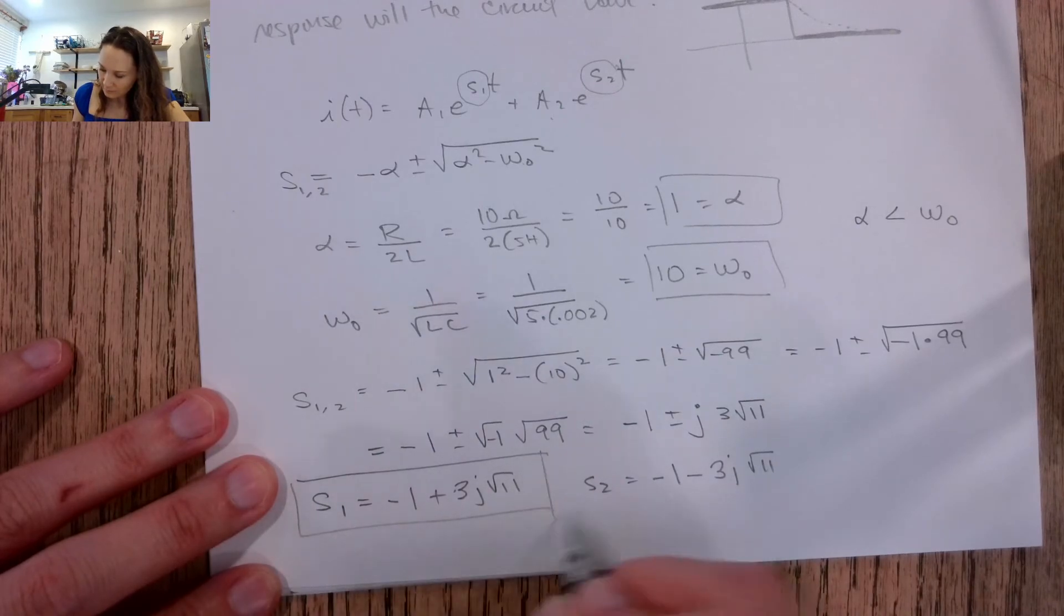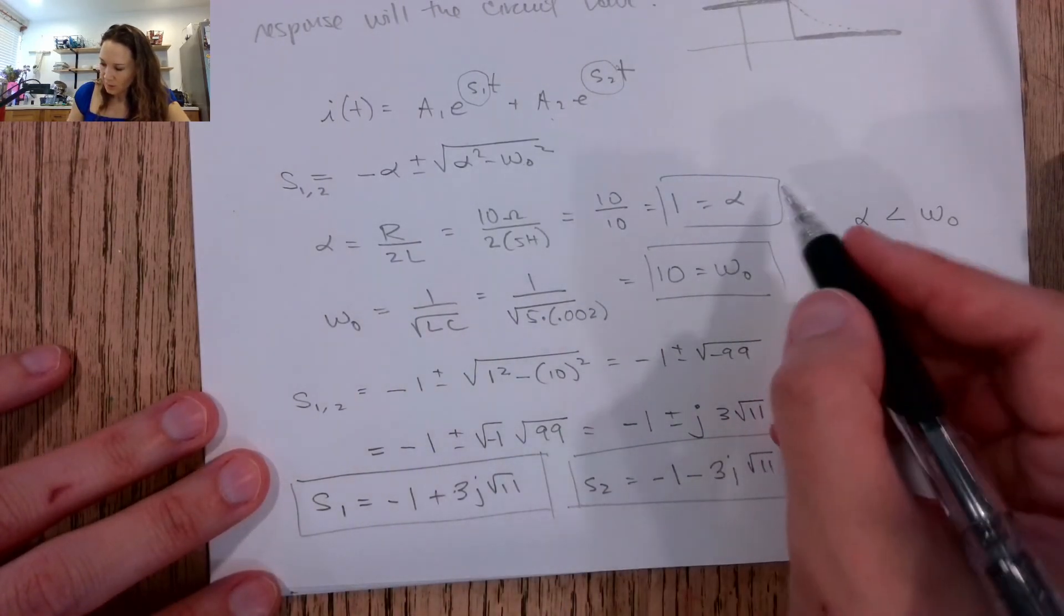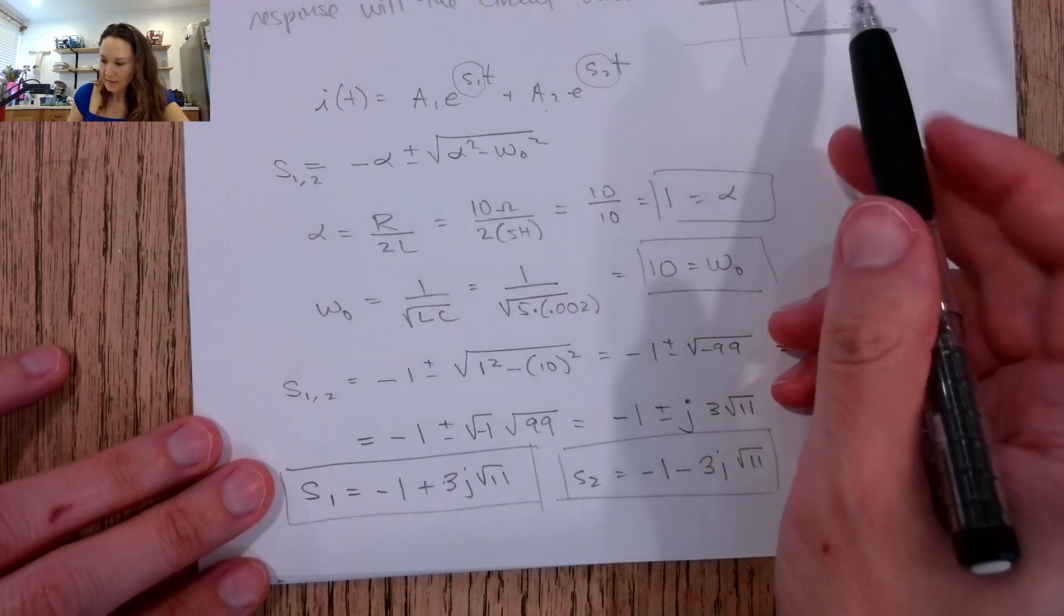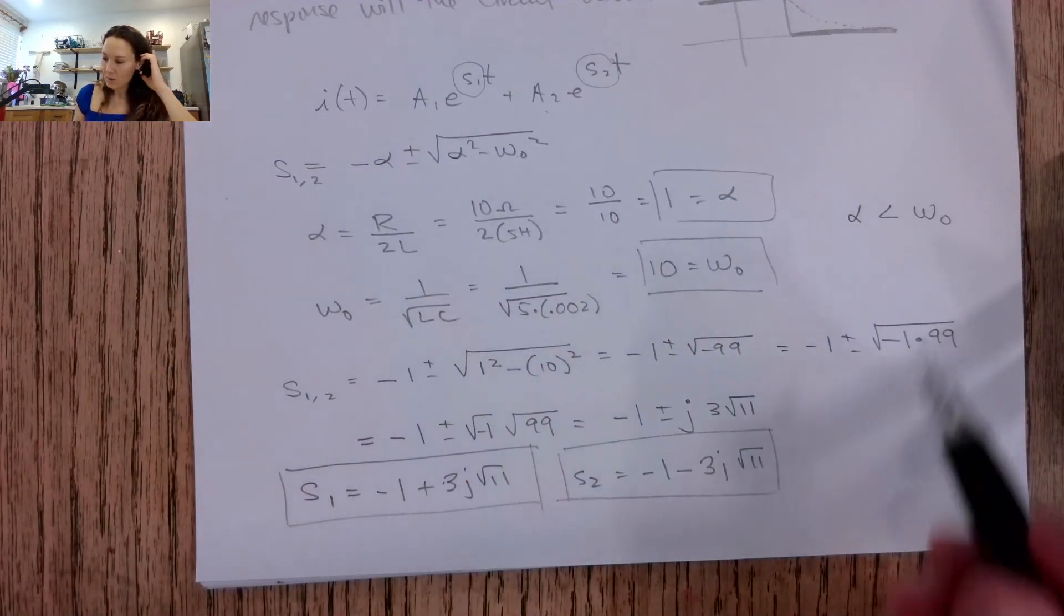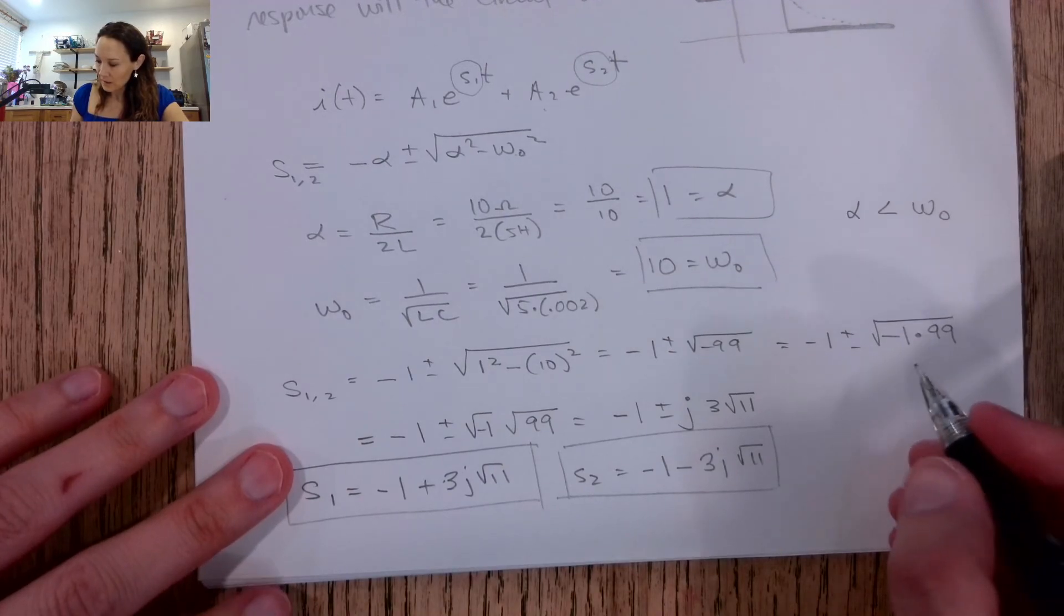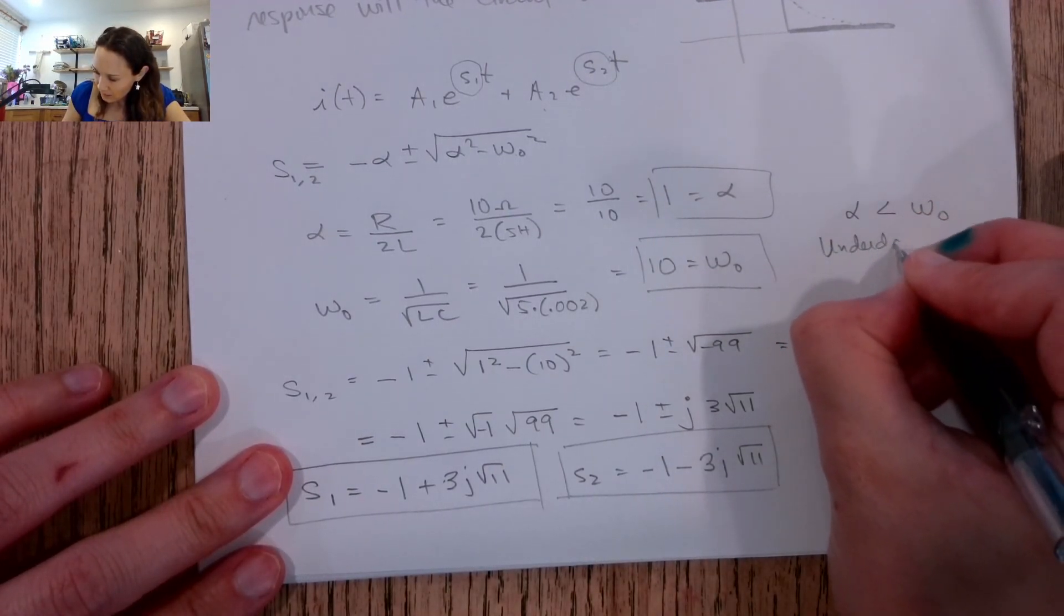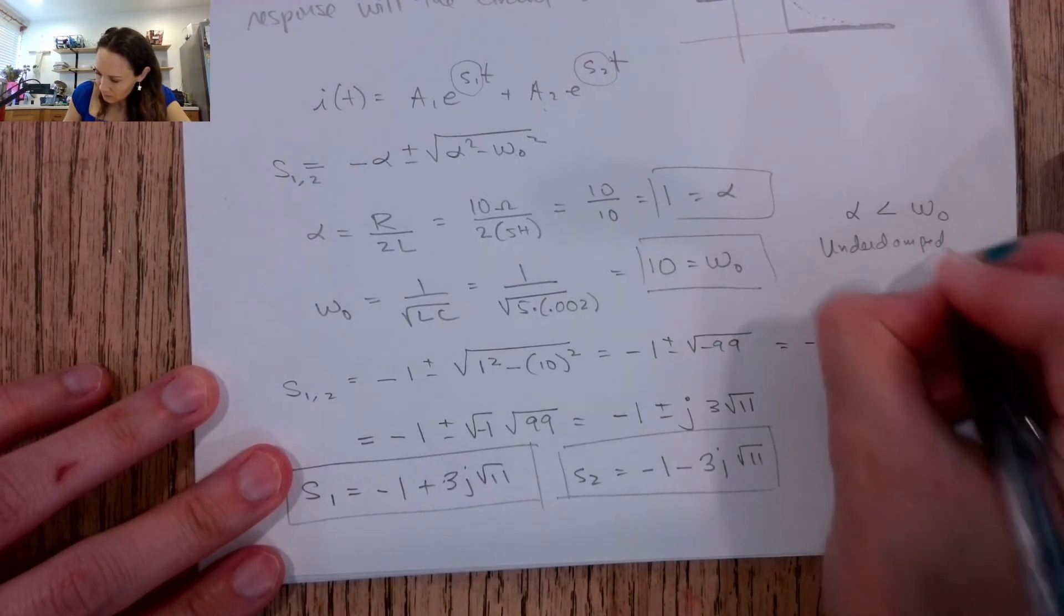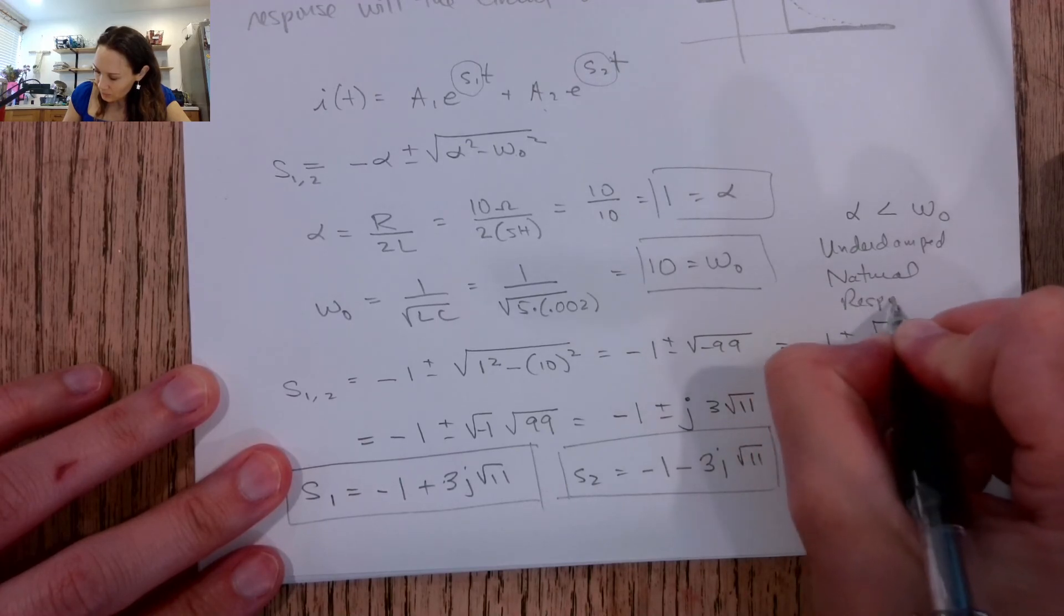Okay, great, so then those are our s1, our s2. We have alpha, we have omega naught, and then the last thing we have to answer is what type of response will the circuit have? Well, since alpha is less than omega naught, this will be the underdamped case. Underdamped natural response.